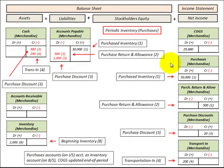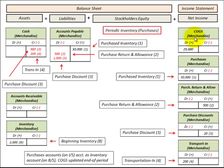Now let's look at our second method for recording purchased inventory. Here we would charge a purchases expense account directly to the income statement. This purchases account would be accumulated for the sales made during that period, and then at the end of the period the purchases account gets closed out to cost of goods sold, which is an expense for those sales. So let's make a purchase of $30,000 on account — we increase accounts payable by $30,000 and debit or increase our purchases account by $30,000.